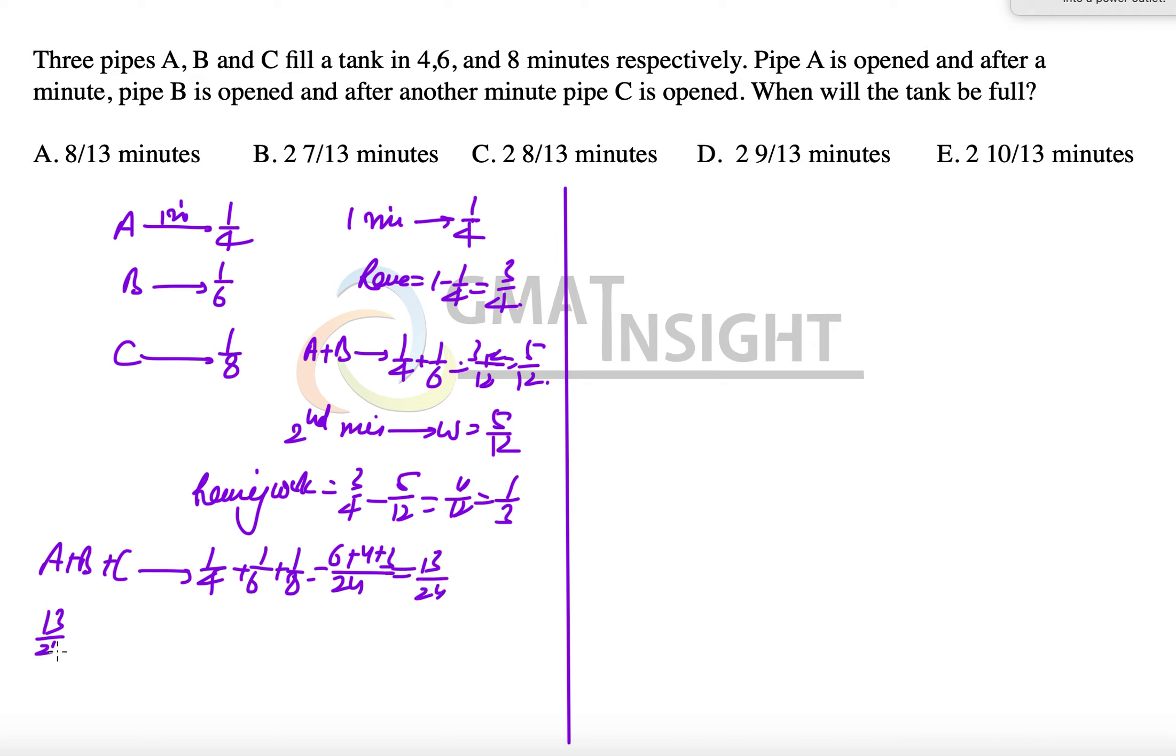Now 13/24 work can be done by all three of them in one minute. That means the remaining work, which is 1/3, will be done by them in 24/13 times 1/3. That means 8/13 minutes. Now the question is the total time.